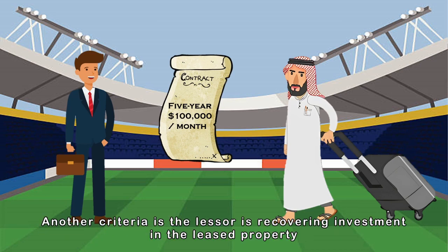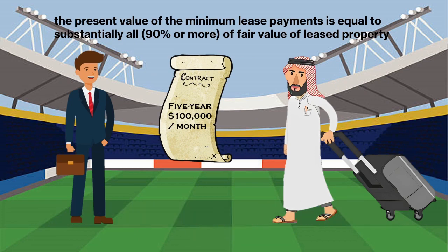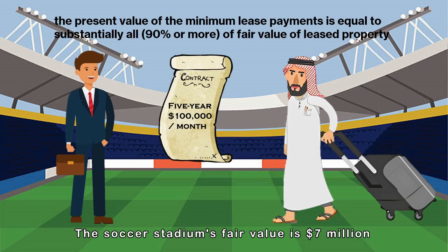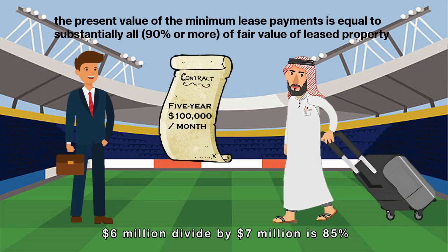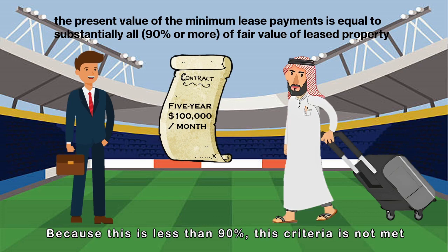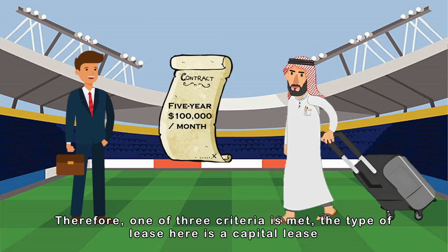For the third criterion, the lessor is recovering investment in the lease property when the present value of minimum lease payments equals 90% or more of the fair value of the lease property. The soccer stadium's fair value is $7 million. The 5-year lease with $100,000 monthly lease payments totals $6 million. $6 million divided by $7 million is 85%, which is less than 90%, so this criteria is not met. Therefore, one of the three criteria is met, and the type of lease here is a capital lease.